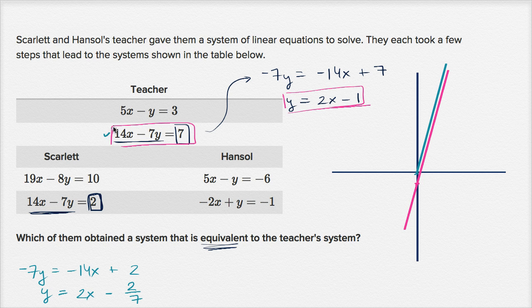Since this and this have no points in common, there's no way that some solution set that satisfies this would satisfy this, because any xy that satisfies this can't satisfy this, or vice versa. They're parallel. There are no points. These two things will never intersect. So Scarlett does not have an equivalent system. Now what about Hansel?